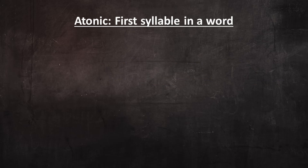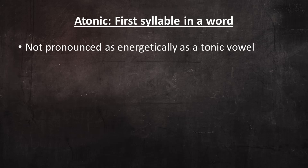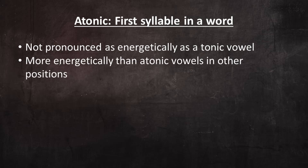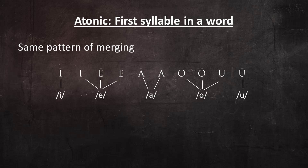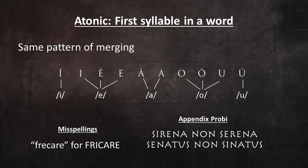First syllable in a word: when the first syllable in a Latin word was atonic, the vowel in that syllable wasn't pronounced as energetically as the tonic vowel in the word, but it was pronounced with more energy than atonic vowels in other positions. So atonic vowels in the first syllable evolved in a way something intermediate between tonic vowels and other atonic vowels. One way that they were similar to other atonic vowels is that generally speaking they underwent the same pattern of merging. We know this because ancient Roman writing preserves misspellings that follow this pattern. They're also attested in entries in the Appendix Probi.